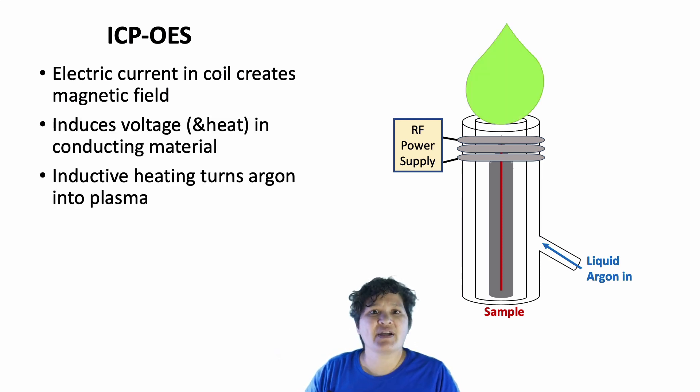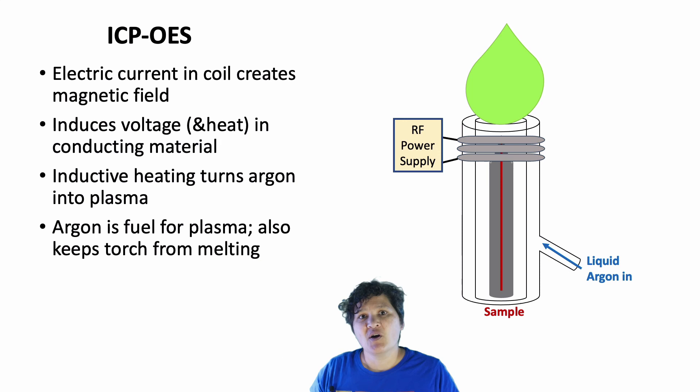Now, the interesting thing about the ICP torch setup is that the argon serves two purposes. First, it's fuel for the plasma, but because it's also entering in liquid form, it serves as a coolant for the torch to keep it from melting despite the high heat.